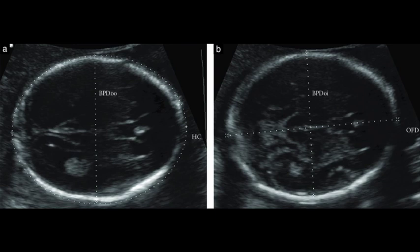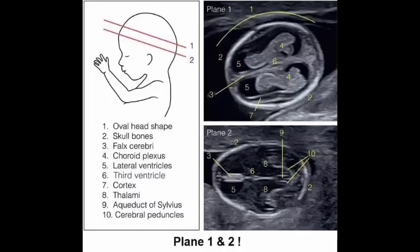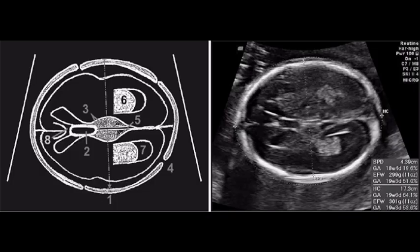Every human has two parietal bones — one on the left side of the skull and one on the right side. Each parietal bone looks like a curved plate that has two surfaces and four sides.